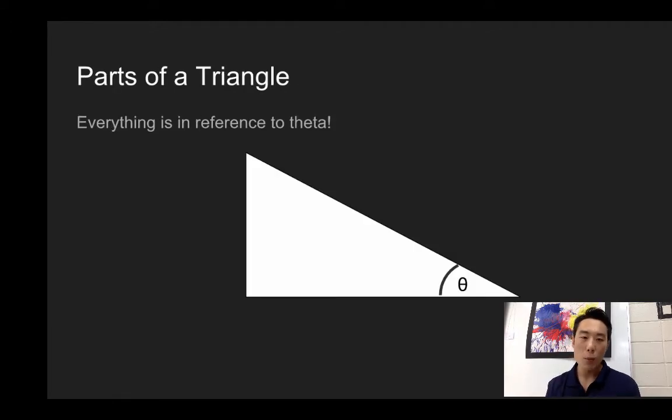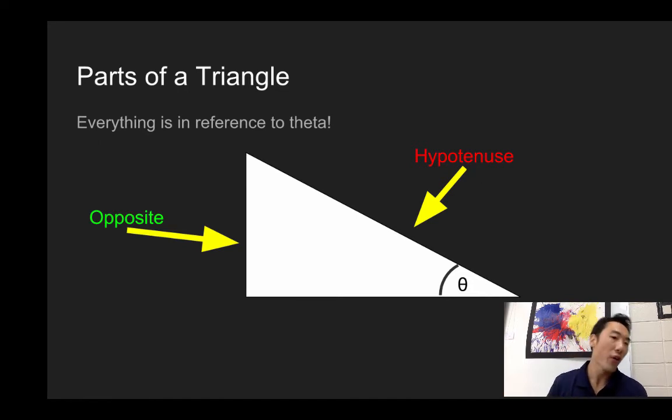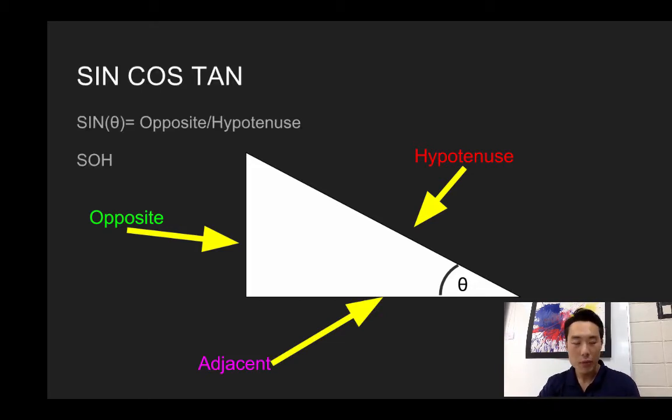Cool. Now, let's go into parts of a triangle. Now, the whole reason behind scalars and vectors is because we can only use our trigonometry stuff using vectors. Okay, now, everything is in reference to theta. Theta is that little symbol you see right there. It is a Greek letter. Okay, that is the lowercase theta. The hypotenuse is the longest side of the triangle. We consider the opposite side or the side that is furthest away from the theta to be the opposite side. And we consider the adjacent side to be the side that is actually touching theta.